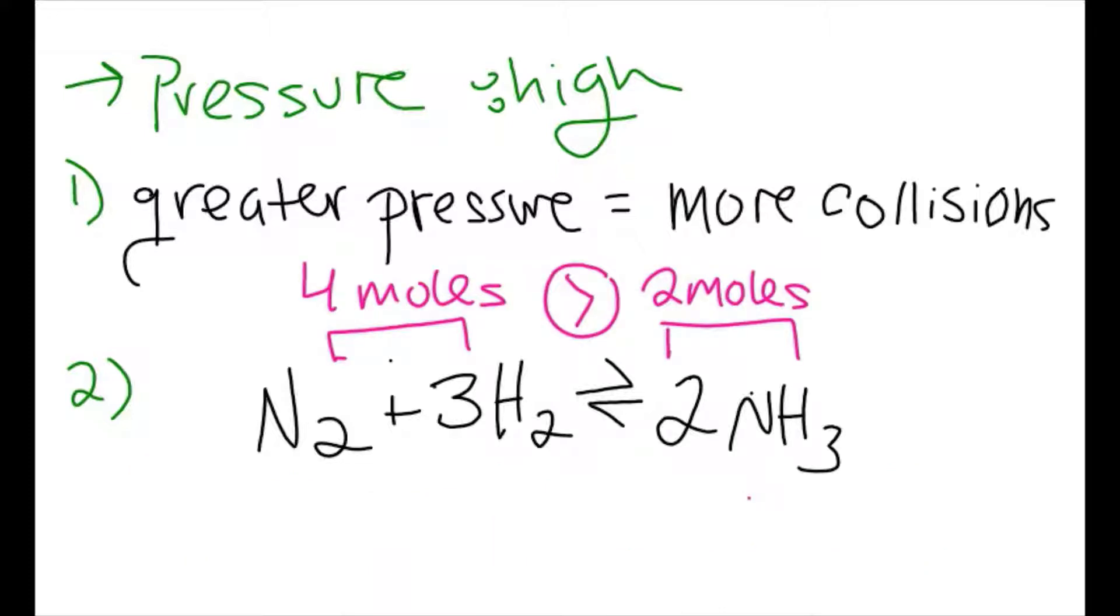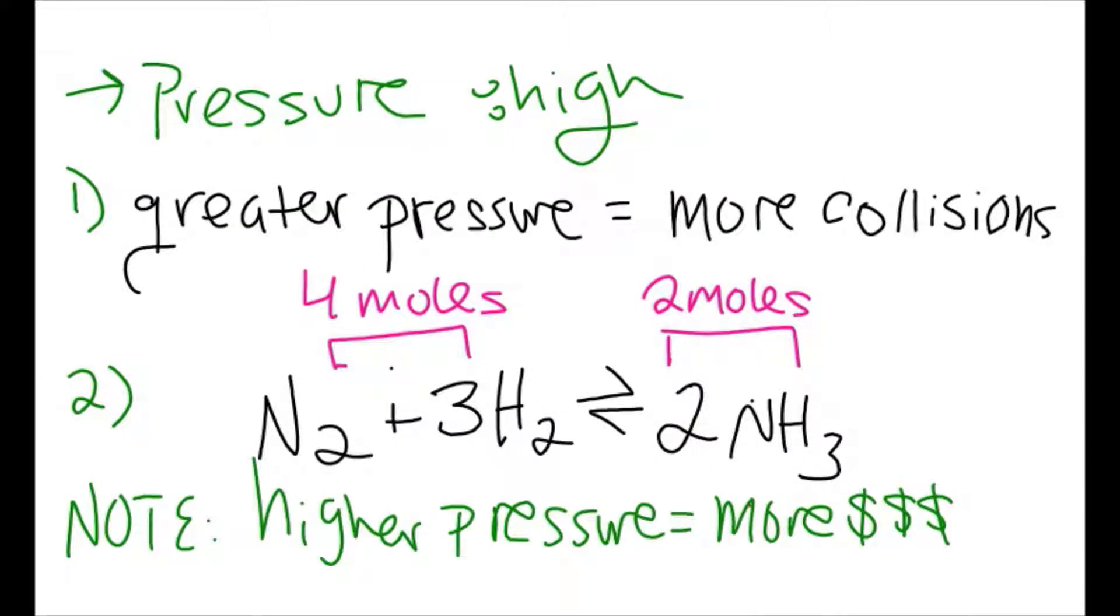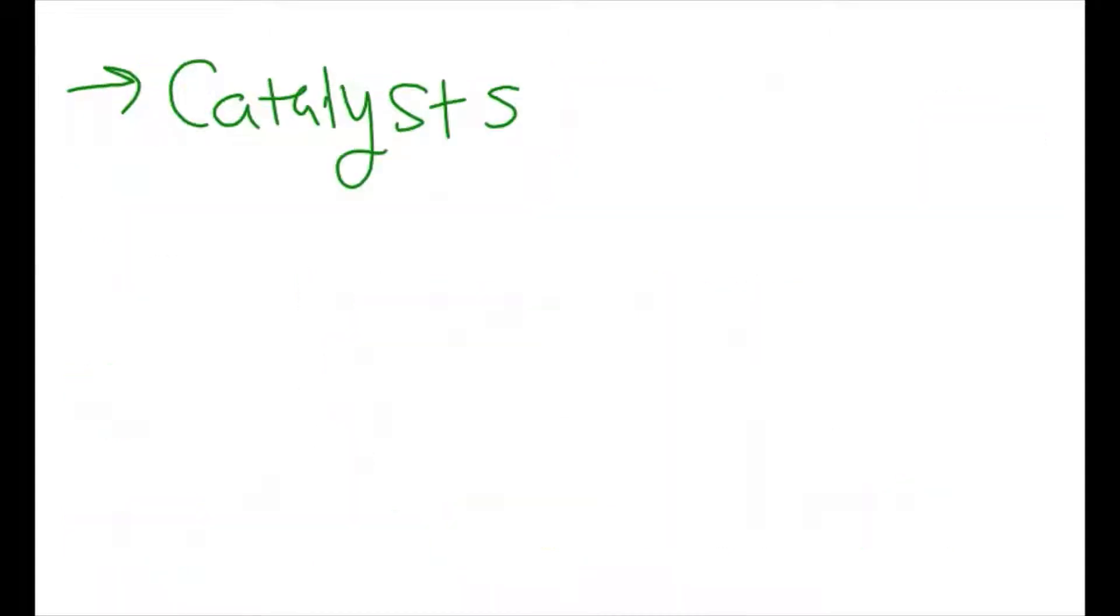As seen in our equilibrium reaction, there are more moles of reactants than products, so we shift right to increase products, which is ammonia. Yet pressure cannot be too high due to the cost of producing and maintaining very high pressures industrially. Thus, the middle ground was decided to be 200 atmospheres.